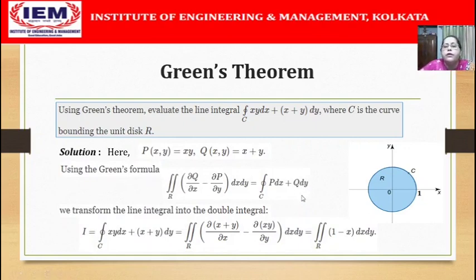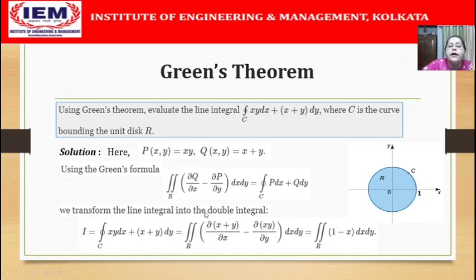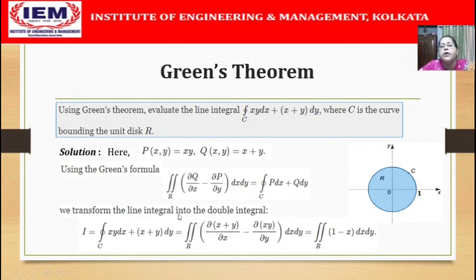We apply Green's formula: the line integral of P dx plus Q dy along C equals the double integral of (∂Q/∂x minus ∂P/∂y) dx dy over R. Here P is xy and Q is x plus y. So the line integral converts to the double integral of (∂/∂x(x plus y) minus ∂/∂y(xy)) dx dy over R, which simplifies to the double integral of (1 minus x) dx dy over R.